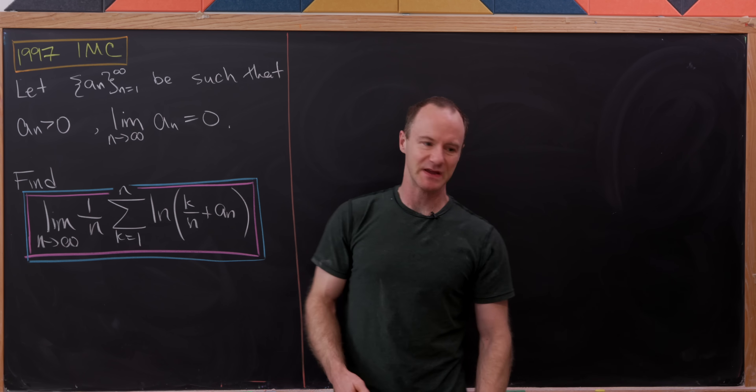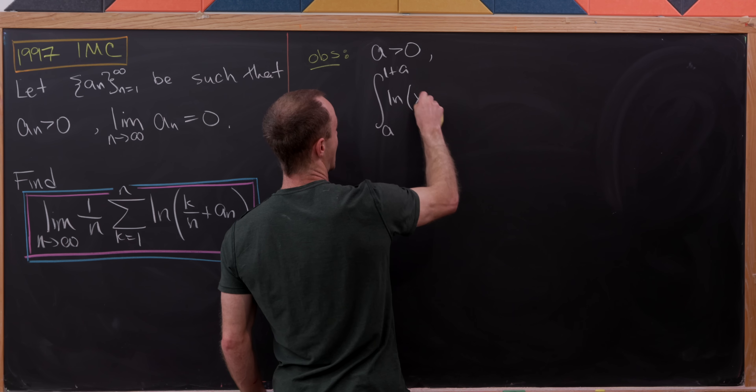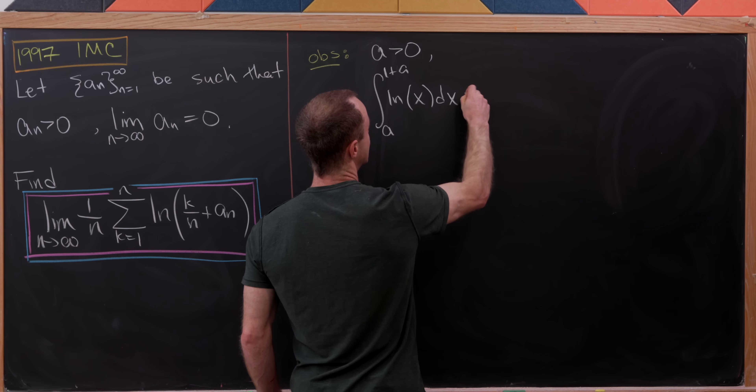As long as a is a positive real number, the integral from a to one plus a of the natural log of x dx can be written as the following Riemann sum: the limit as n goes to infinity of delta x times the sum as k goes from one to n of the natural log of x_k. That's just the straight definition — we need to find delta x and x_k in our setup.